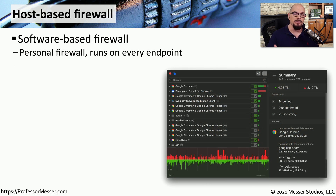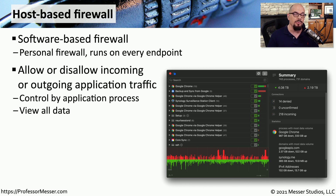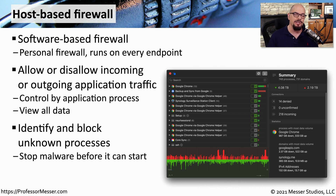It's also useful to have firewalls on each individual endpoint — host-based firewalls — which are software running in the operating system of our endpoints. Because this software runs on our endpoints, it can see all of the applications in use and allow or disallow communication for each individual app. Even if information sent across the network is encrypted, a host-based firewall can see the in-the-clear traffic on the individual endpoint. It can also identify unknown processes that are trying to start and block malware before anything executes.